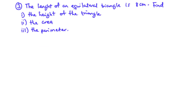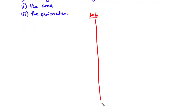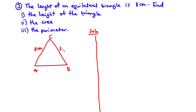Let's take an example: the length of an equilateral triangle is 8 centimeters. Find the height, area, and perimeter of the triangle. Because all three sides are equal, AB, BC, and AC are all 8 centimeters. Since CD divides AB equally, AD is 4 centimeters and DB is also 4 centimeters.